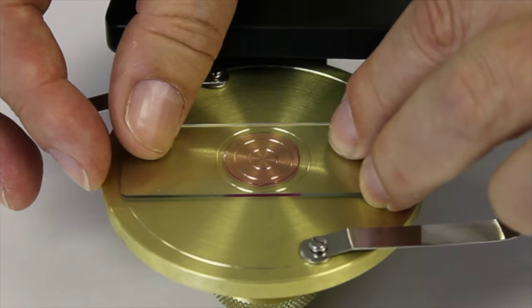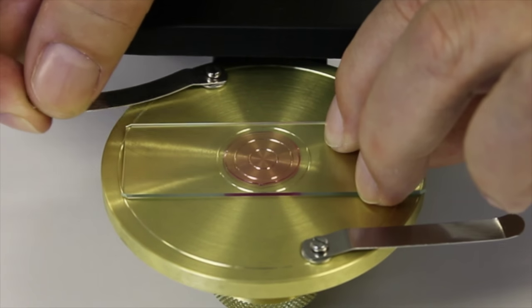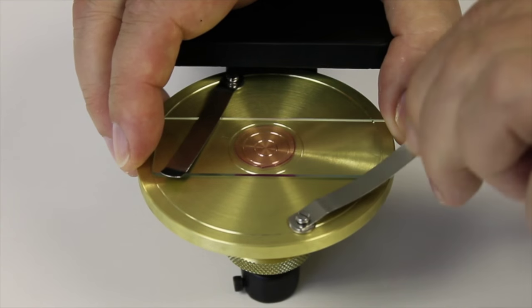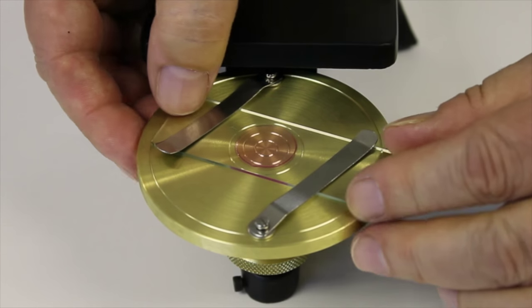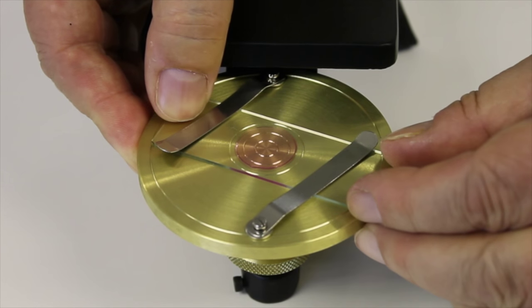It is important that the specimen and mountant have been placed in the center of the slide. A crosshair target is supplied with the ringing table for this purpose.